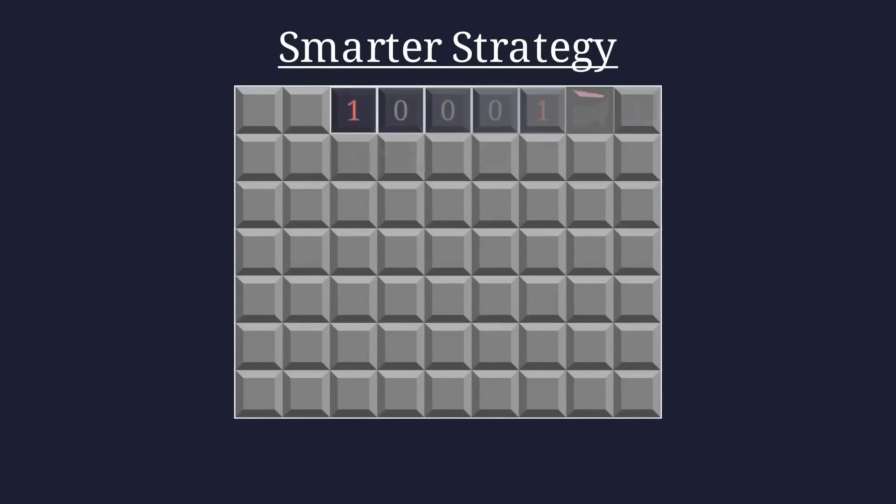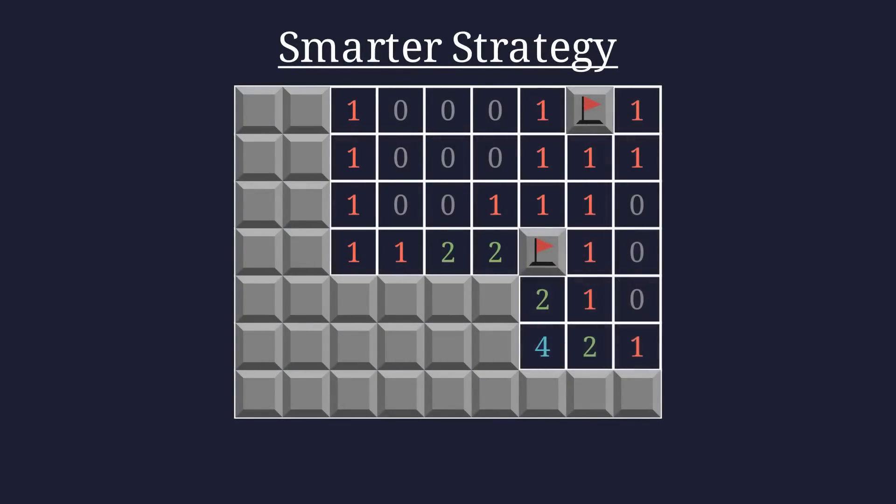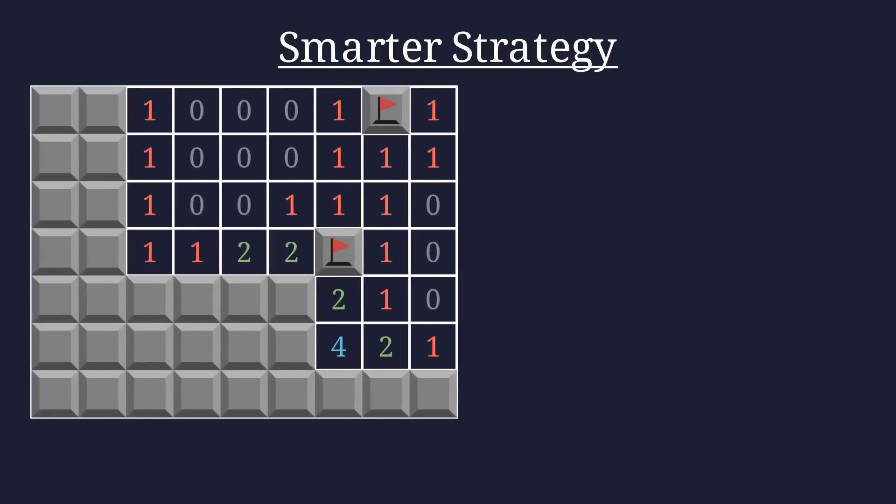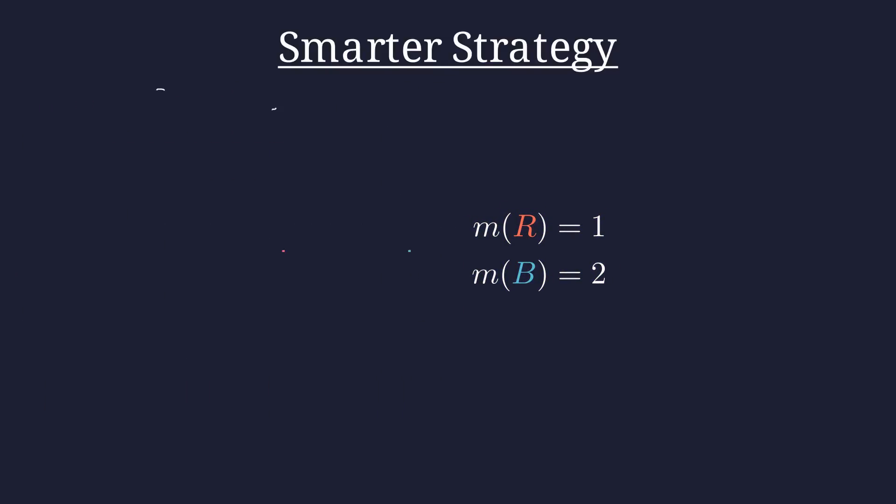Returning to our original board, let's consider these two adjacent cells. Their neighbors, here colored in red and blue, we can call the sets R and B. We know these sets contain 1 and 2 mines respectively, which we can represent like so.